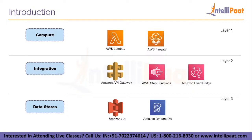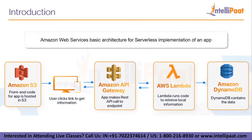Now that we know what services can be integrated to form a serverless computing environment, let us see a basic architecture built using AWS services and how it is implemented in this demo app. First, your front-end code is hosted on S3, which is a service where objects are stored — any object is allowed, including HTML files, CSS files, and JavaScript files. All that working code is put onto S3, and your users will access the website from S3.